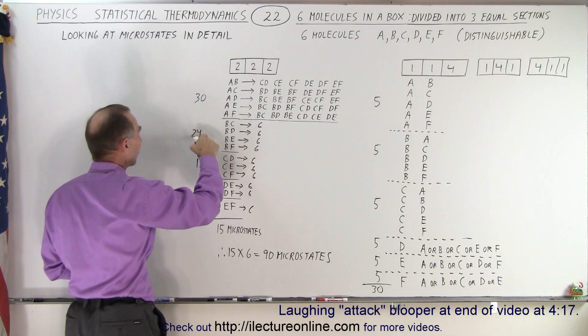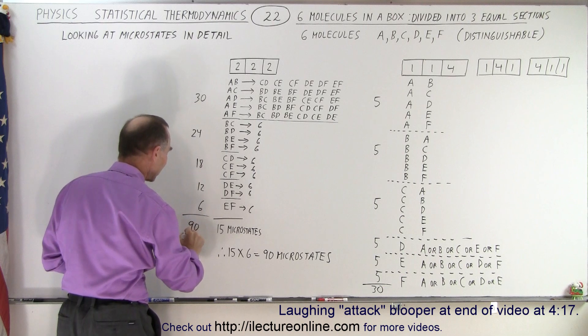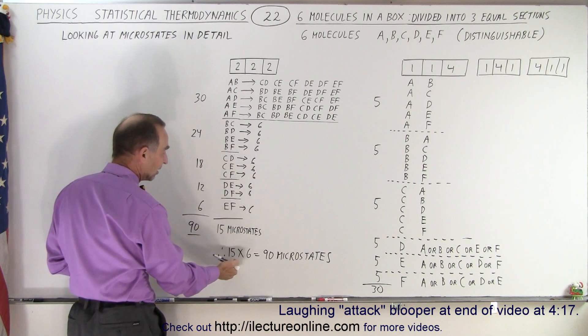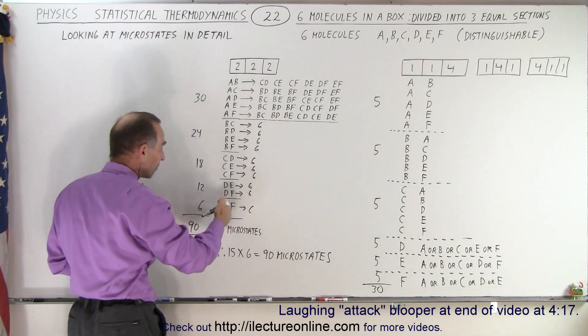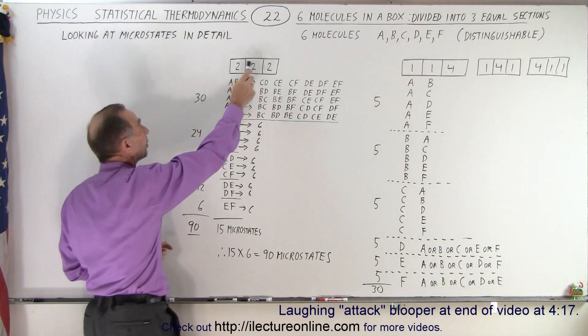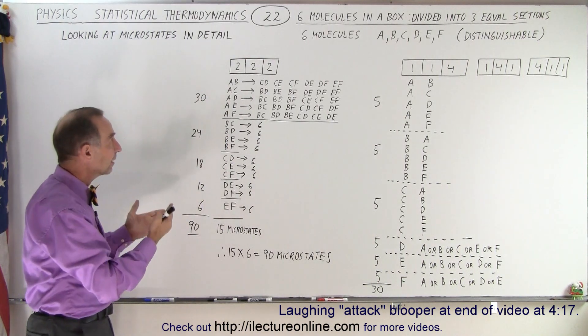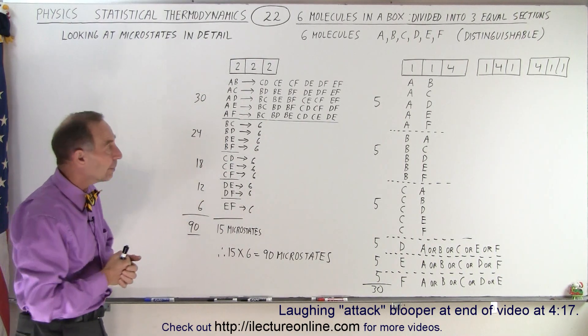If we add them all together that would be fifty-four, sixty-four, seventy-two, eighty-two, eighty-four, a total of ninety microstates. Again, fifteen times six because this gives us fifteen combinations times six. Indeed, ninety microstates in the case where we have two, two, and two molecules, distinguishable molecules divided into the three partitions in the box.